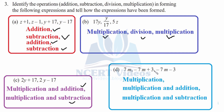For part d: 7m, minus 7m plus 3, minus 7m minus 3. In the first case, only one operation is happening — multiplication: m is getting multiplied to 7. Here, m is getting multiplied to minus 7 first, and then the output is getting added up to 3 — so multiplication and addition. Here, multiplication of m and minus 7 happens first, and then from that output, 3 is getting subtracted — two operations: multiplication and subtraction. This is how you do question number 3.